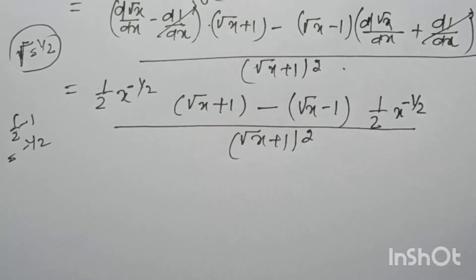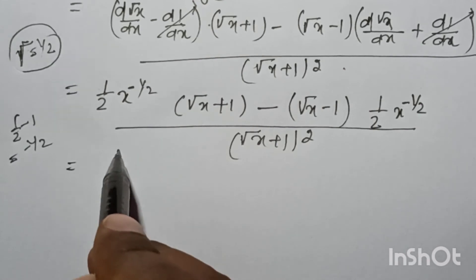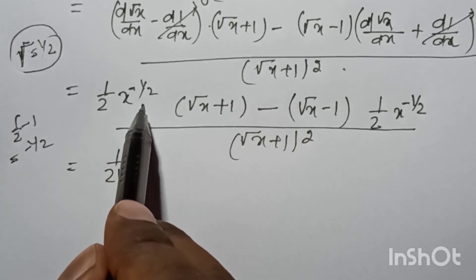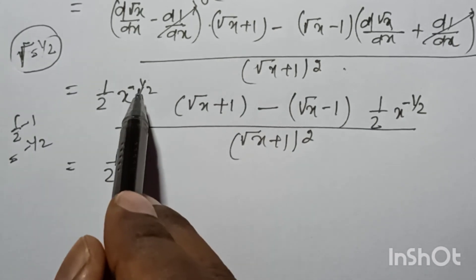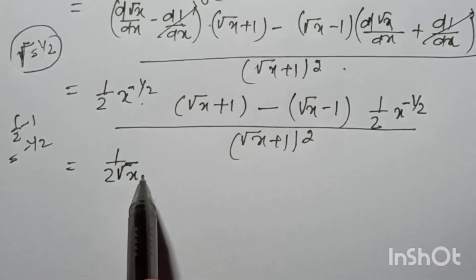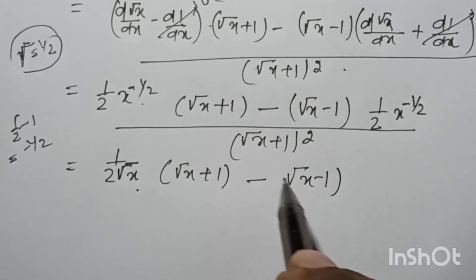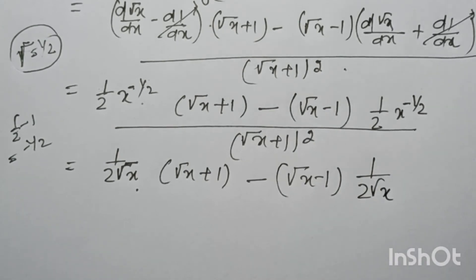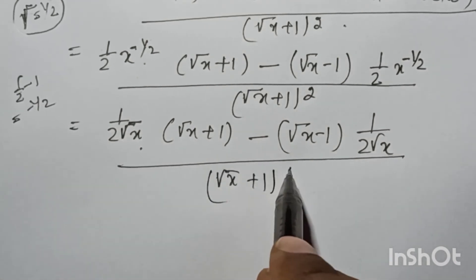Now you can write 1 by 2 into x to the power minus 1 by 2 — converting the negative exponent, that is 1 by root x — into root x plus 1, minus root x minus 1 into 1 by root x, the whole divided by root x plus 1 square.